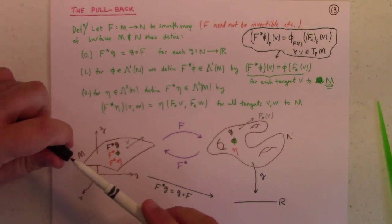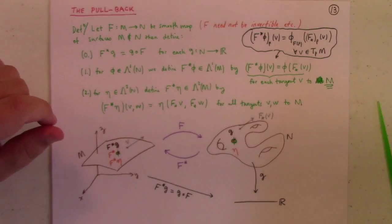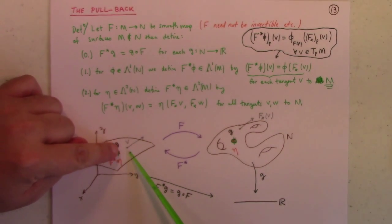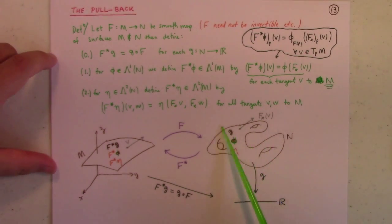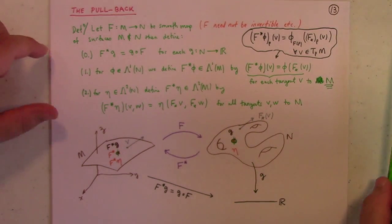Now likewise for a two form, you also use the push forward to basically convert vectors on M to vectors on N, and so that allows us to take the value of the two form over here and give it to a corresponding two form, the pullback F pullback eta over here. So F pullback eta on VW is eta of the push forward of V and the push forward of W for all tangents V and W to M. And that's how you do it, that's the pullback.